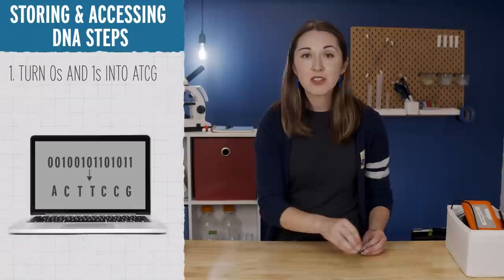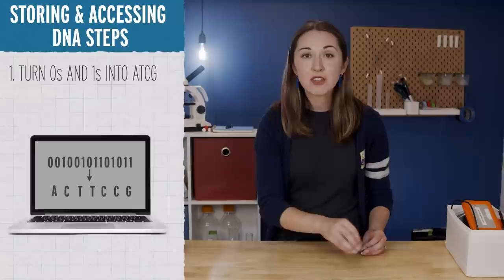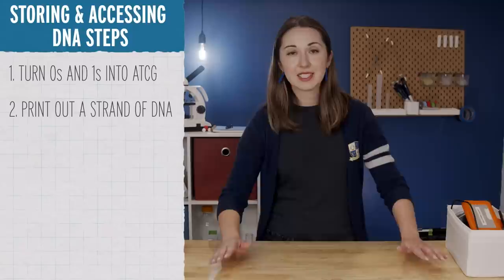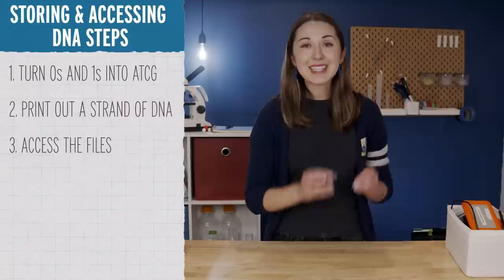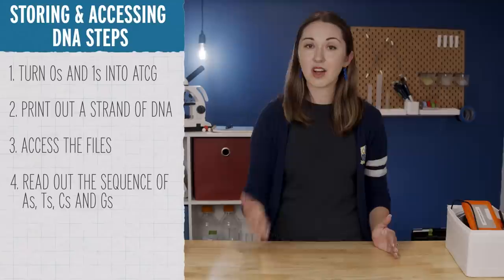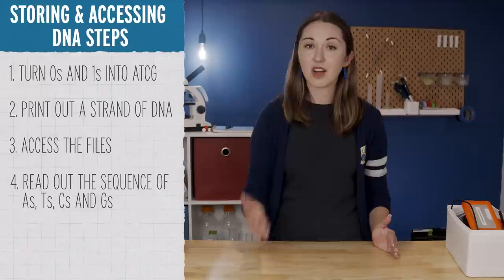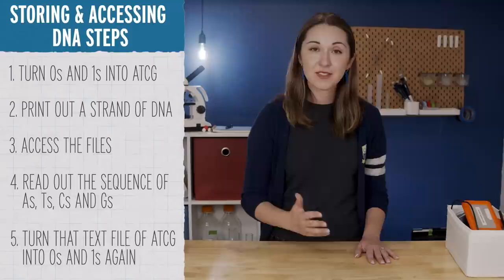There are going to be five big steps for storing and accessing data in DNA. First, you're going to need to turn the zeros and ones of computer file language into the A's, T's, C's, and G's of DNA language. That will happen in your computer. Second, you need to physically print out a strand of DNA that encodes those specific A's, T's, C's, and G's. This is going to happen on a DNA printer. Then you can go store your DNA in a tube somewhere. Third, when you're ready to retrieve your data, you need to access the file or set of files of interest from your DNA storage tube. Fourth, when you want to read the information you've accessed, you have to take that DNA molecule and then read out the sequence of A's, T's, C's, and G's that are on it. That happens in a machine called a sequencer. Fifth, and finally, you can then turn that text file of A's, T's, C's, and G's into zeros and ones again. And that happens once again in your computer.